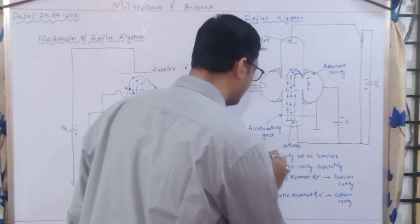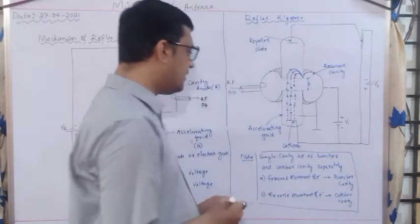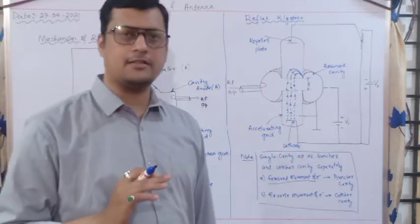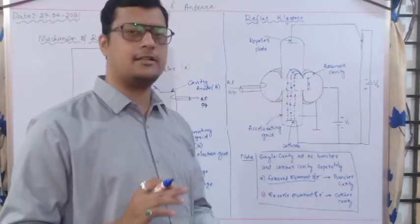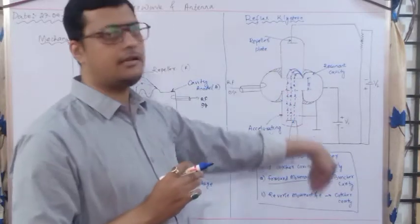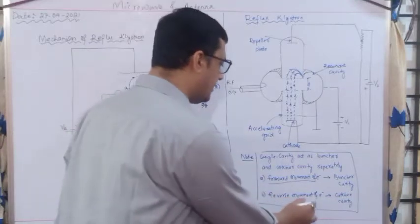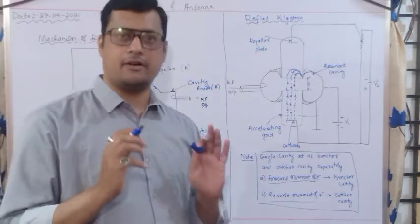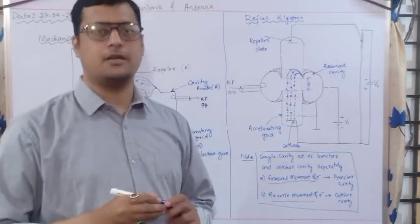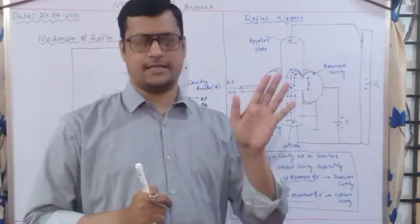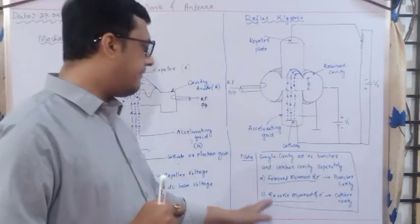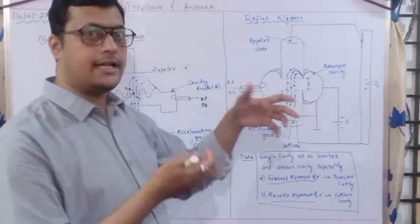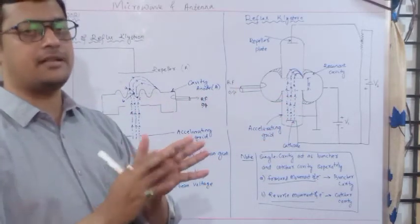When the electrons move in a uniform forward direction, the cavity is called a buncher cavity. When these electrons return back to the same cavity in the backward or reverse direction, it is called a catcher cavity. These are two terms for the same cavity but with different working modes — if working in forward mode it is a buncher cavity; if collecting all electrons repelled back from the repeller, it is a catcher cavity.